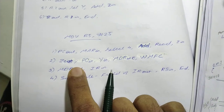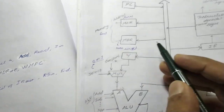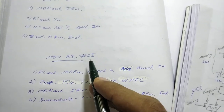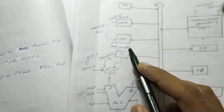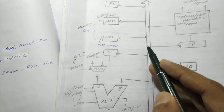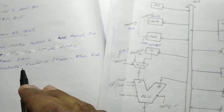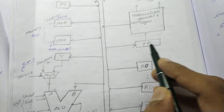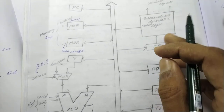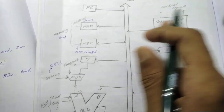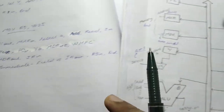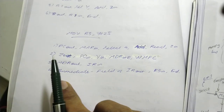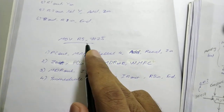Now we have MDR out and IR. What is in MDR right now? MOV R5, #25. We take it onto the internal processor bus through MDR out, and then IR in — so now we have the instruction in the instruction register. It is then decoded by the control unit, and the necessary control signals are given out to execute MOV R5, #25.